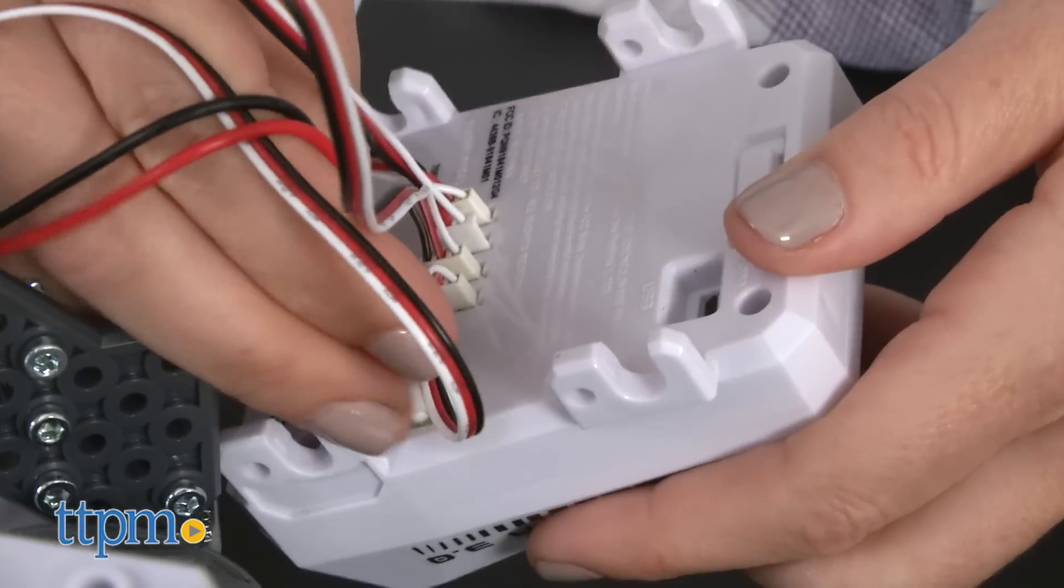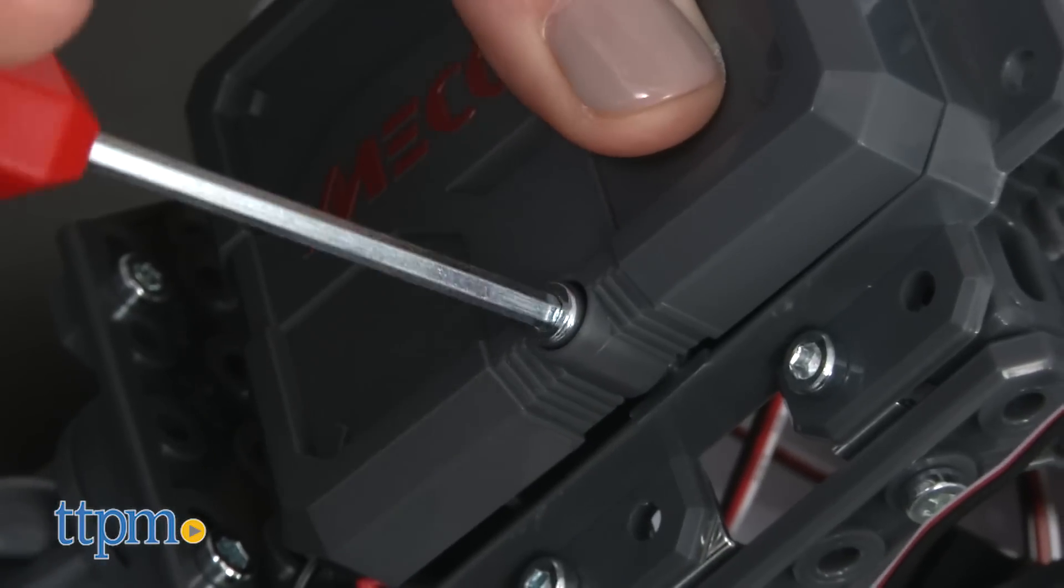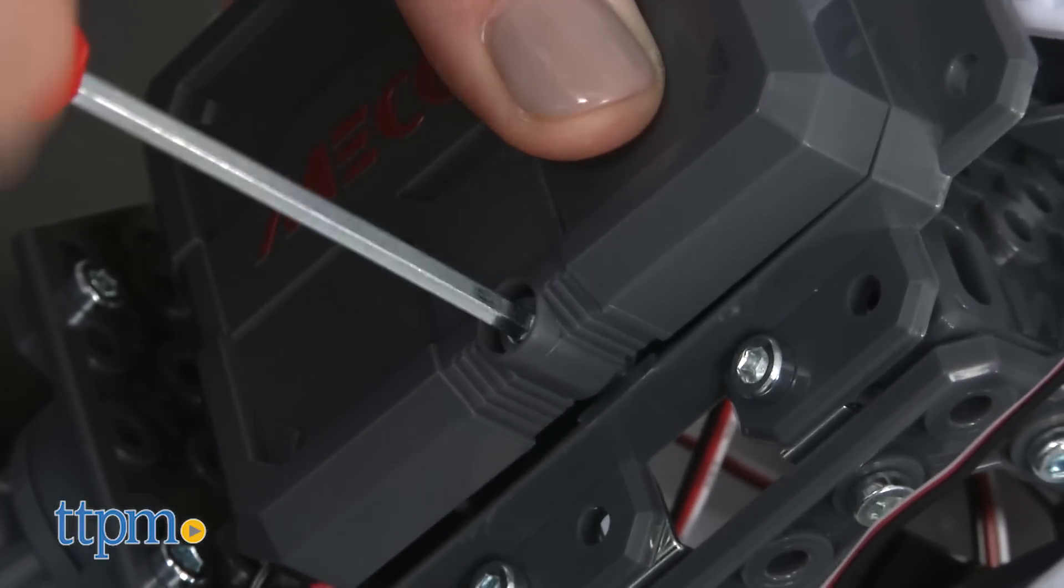With 332 parts, it took our TTPM builder four hours, though it may take some builders more or less time depending on experience.